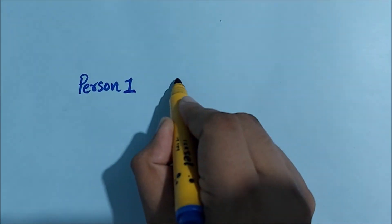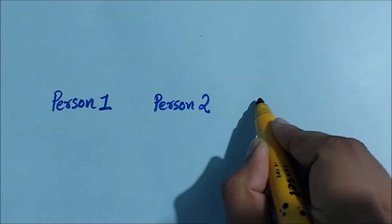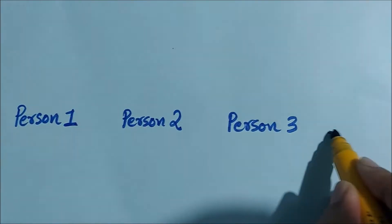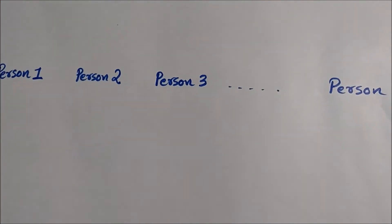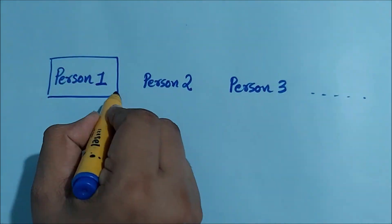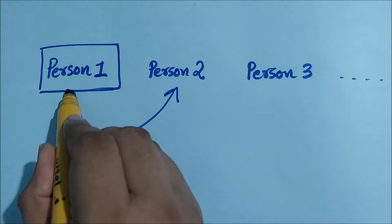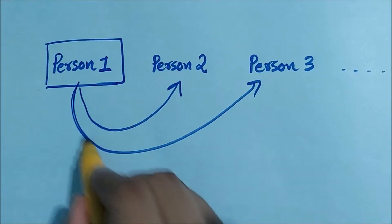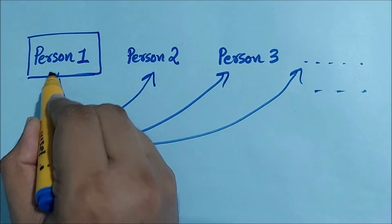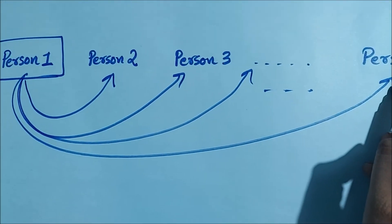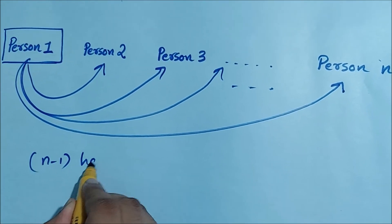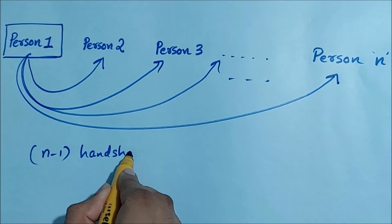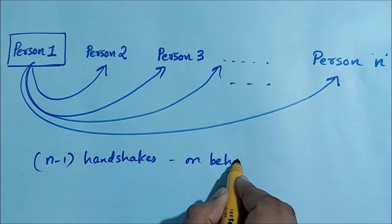Let's visualize n persons standing in a row. The first person will go to every other person and make handshakes, so we count n-1 handshakes on behalf of person 1's handshakes.